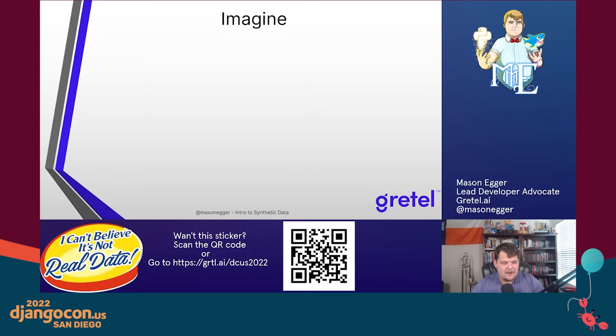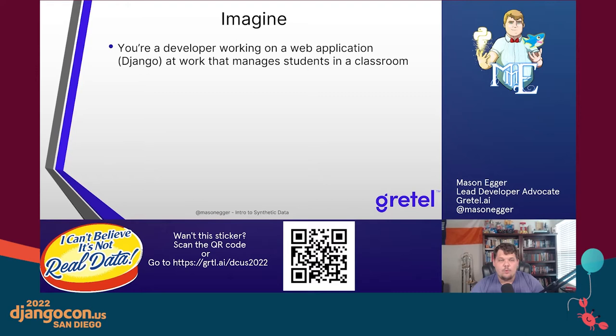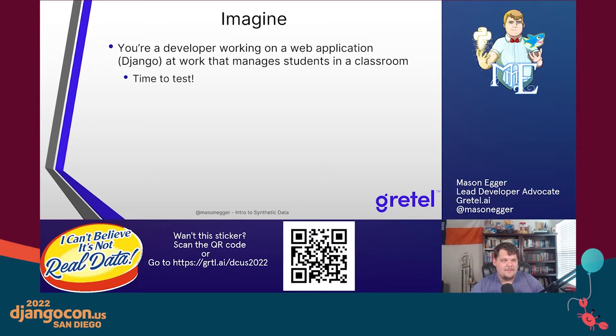I want you to set the stage and imagine some scenarios. Say you're a developer working on a web application — maybe it's a Django application, we are at DjangoCon after all — that manages students in a classroom, whether it be grades, attendance, things that students would need in a learning system. You're building out your application and now it's time to test. Let's test it on some production data, data that's already being used, since we'll need to migrate off the old system.